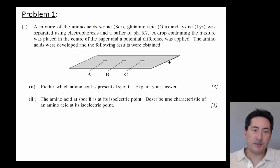This is an exam question. A mixture of serine, glutamate acid and lysine was separated using electrophoresis at a pH 5.7 buffer. A drop containing the mixture was placed in the center of the paper and potential difference was applied. What are the results? Which amino acid is here and tell me why. Let's just do this one first. Describe one characteristic amino acid at its isoelectric point: has no charge. Let's just get that one out of the way.